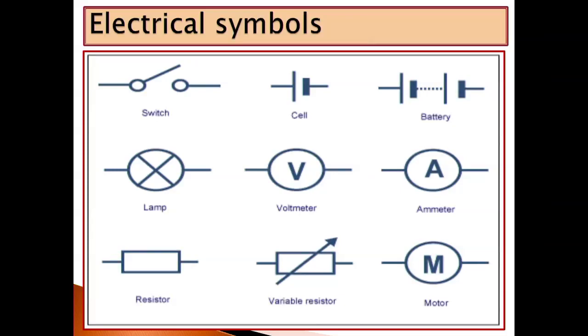Some students may confuse the spelling of 'lamp' — instead of putting P they put B, making it 'lamb,' which is not correct; that describes the young one of a sheep. The lamp has a P. Then we have a voltmeter, an ammeter for measuring voltage, a resistor, a variable resistor which has an arrow going across, and the M for motor. We need to know these electrical symbols, as we normally use them when illustrating electrical circuits.